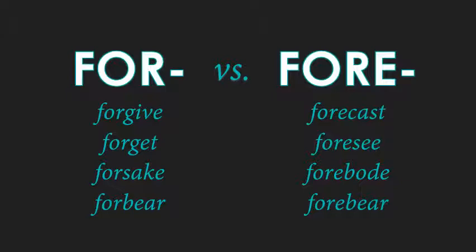Then finally, 'forebear' — we hear this most often as a noun: 'your forebearers.' Those are the people who came before, related to 'bear' meaning to give birth. They are the predecessors who gave birth to the family before you — your ancestors, your great-great-grandparents, because it's related to the word 'to bear,' to give birth. So you have these two words, 'forebear' and 'forbear,' which are homonyms, but that little 'e' makes a big difference in meaning.